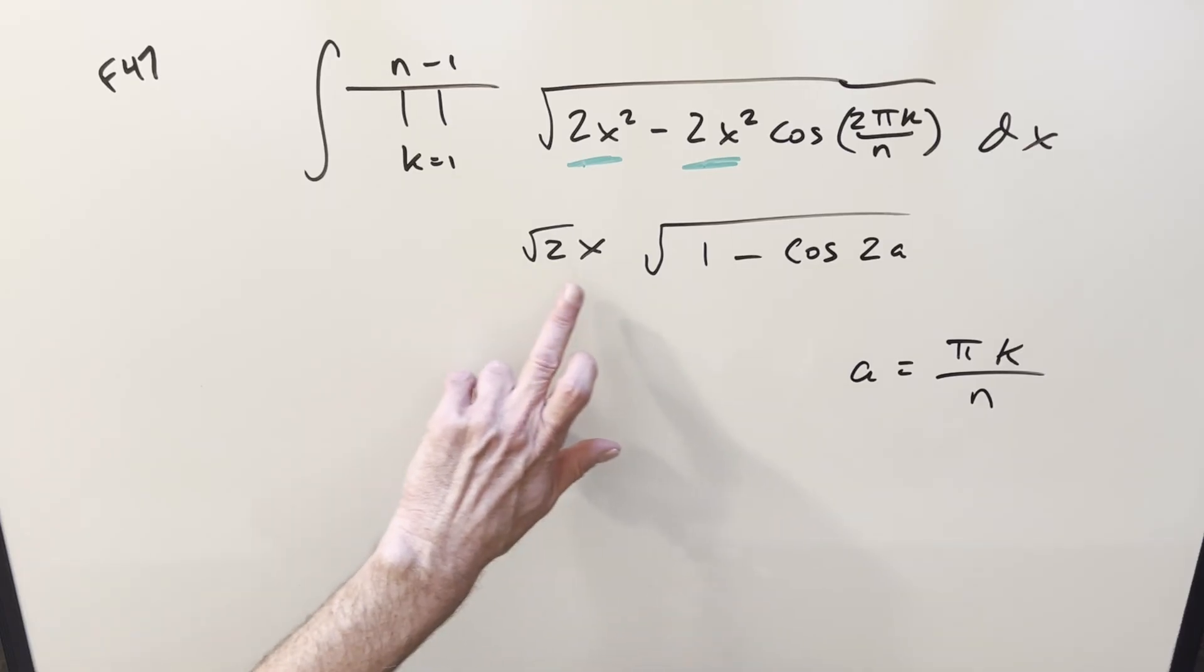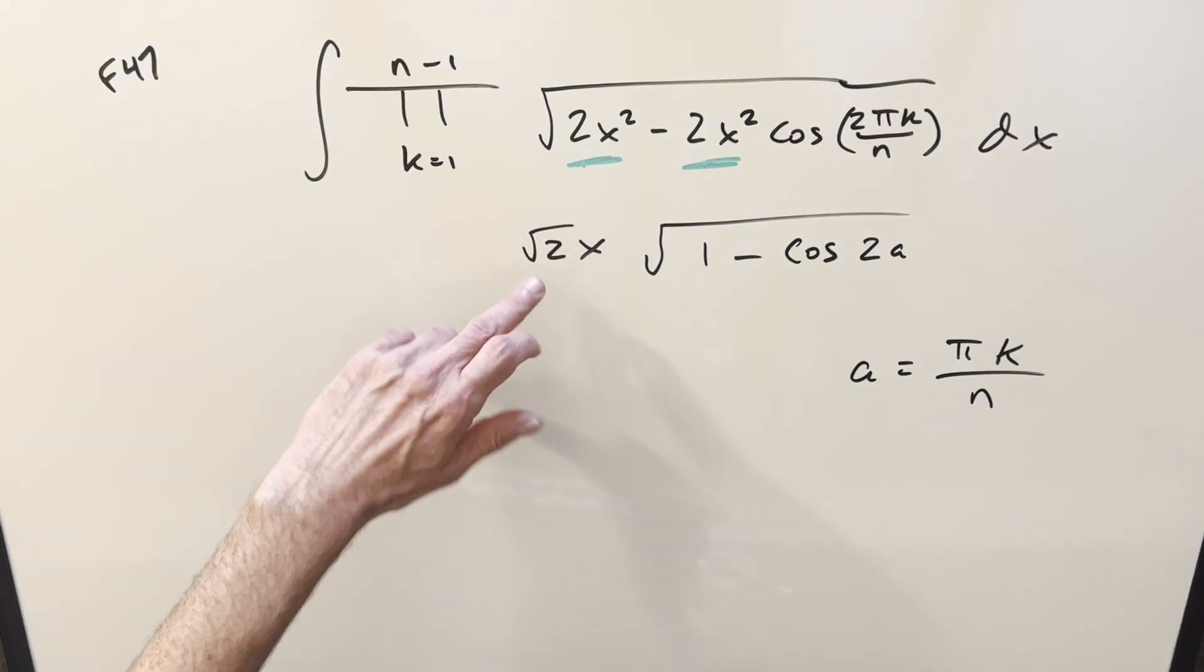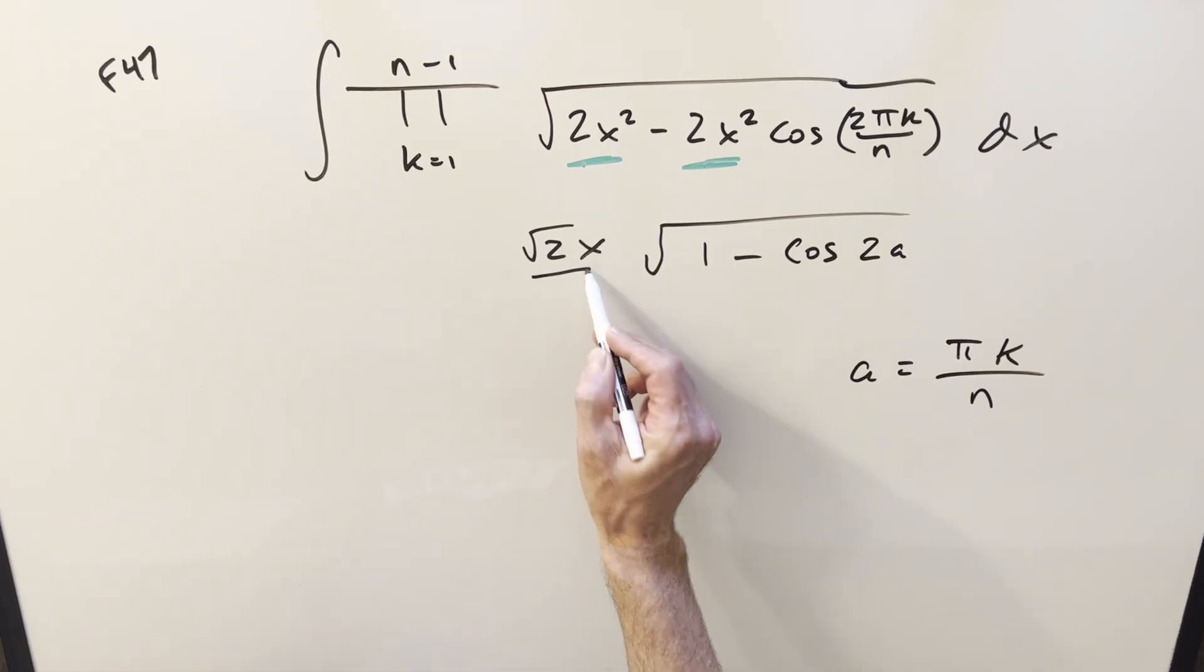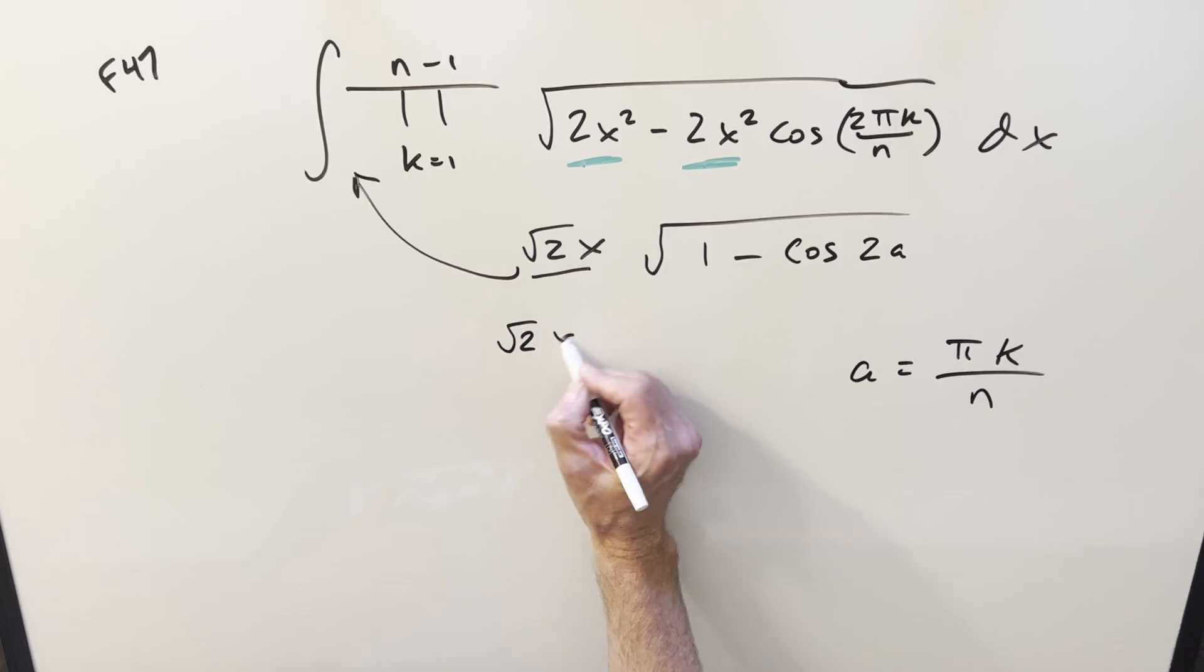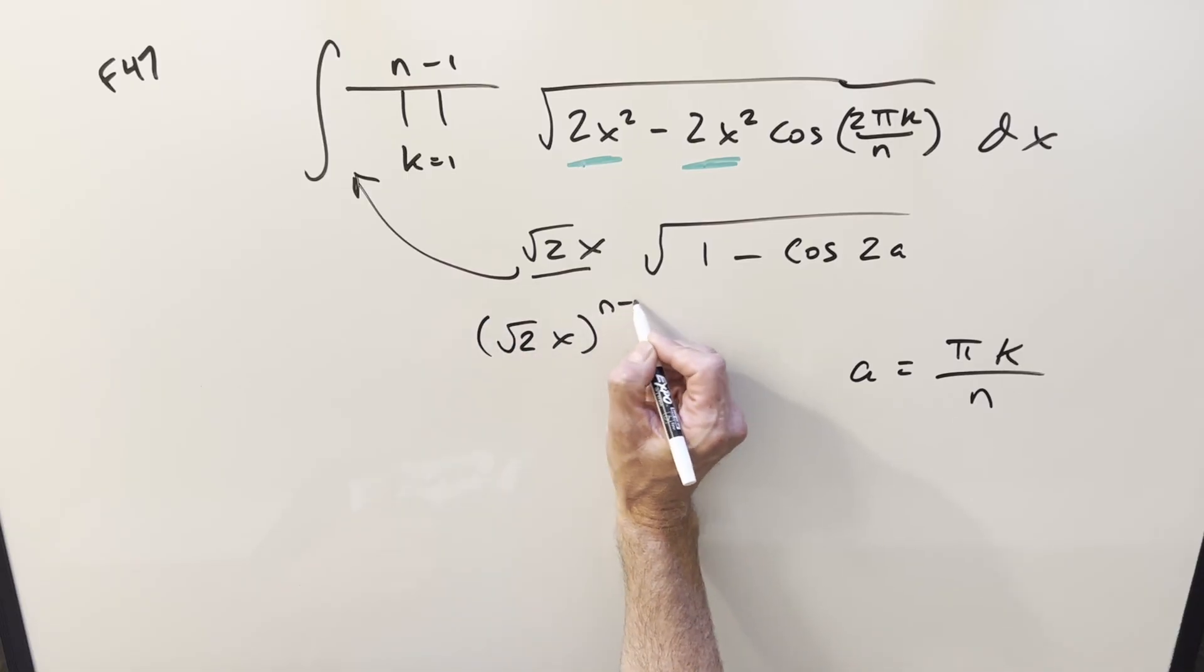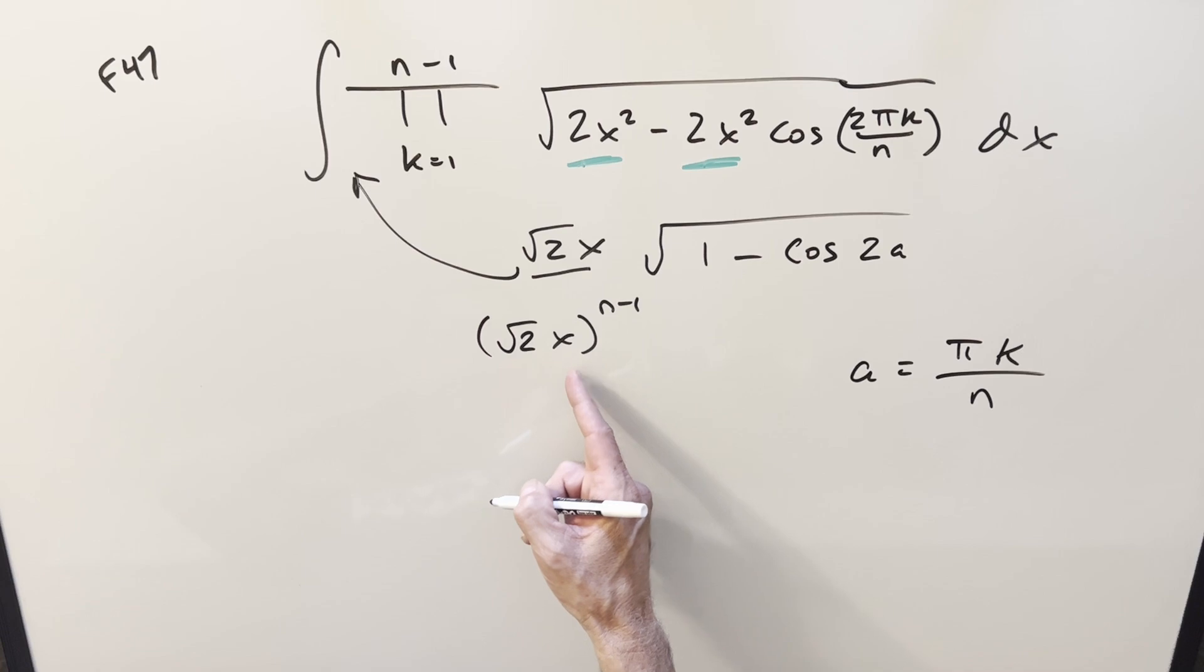But then doing it like this, we can kind of split up the two things. Inside the product, we're just going to be multiplying by square root of 2x over and over again, and it's got no dependency on the k. So actually, the way we can take it outside of the sum is to think about it as square root of 2x to the n minus 1, just because we're going to have n minus 1 terms in this.